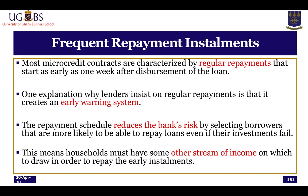Another way that MFIs operate is to ensure frequent repayments of installments. Most microfinance contracts are characterized by regular payments that can start as early as one week after the disbursement of loans. The reason for these early and frequent repayments is to provide an early warning system, since consistent defaults within that period will trigger alerts. The repayment schedule reduces the bank's risk by selecting borrowers who are more likely to repay loans even if their investments fail. On the flip side, households must have other income streams to draw on in order to meet early installments.